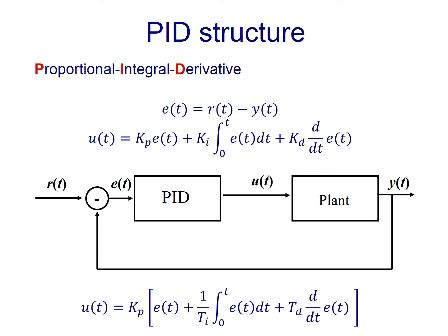Then we are going to integrate the error and multiply it times some gain Ki, which is the integral gain. And finally, we are going to add a proportion of a derivative of the error.